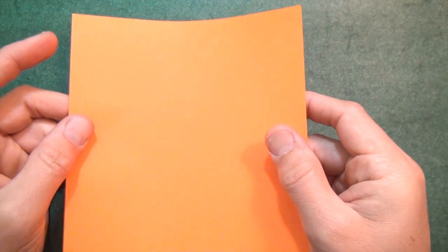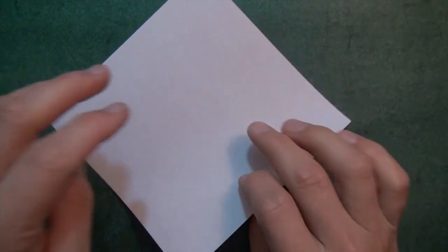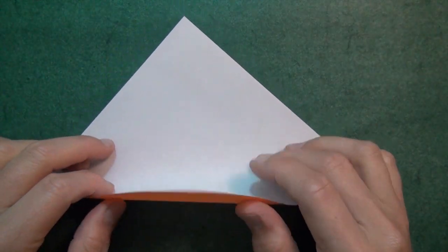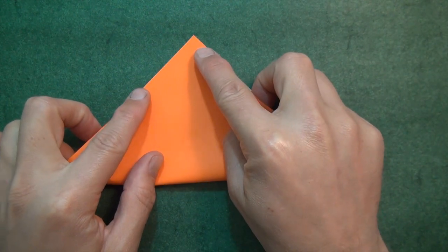Want to learn how to fold it? Ready, set, here goes. Alright, so for this model it's best to use a 6 inch square of kami. White side up, let's valley fold diagonally in half.